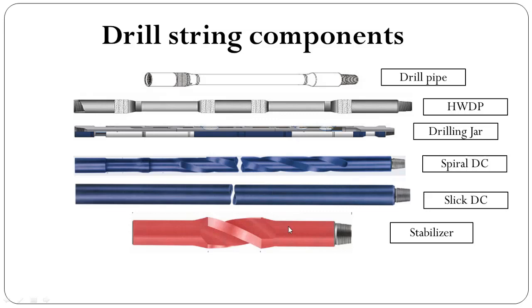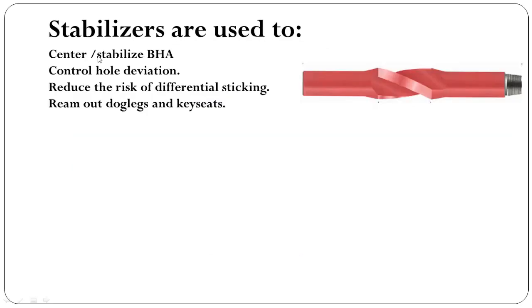Another component of the drill string is the stabilizer. Stabilizers are used to center or stabilize the BHA, control hole deviation, and reduce the risk of differential sticking. Stabilizers can also be used to remove dog legs and key seats.